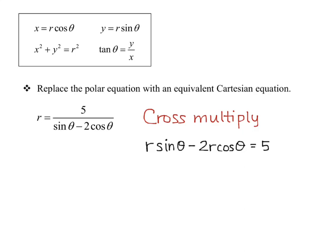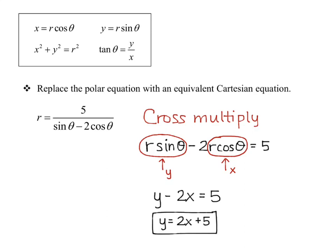Now I plug in my identities: r sine theta is y, and r cosine theta is x. So I have y minus two x equals five, and if I solve that for y, I get y equals two x plus five. The really cool thing about switching between polar and Cartesian is that we can look at that original polar equation, r equals five over sine theta minus two cosine theta, and know that it's just a line.